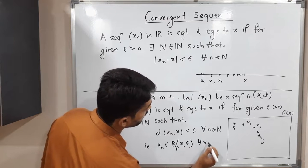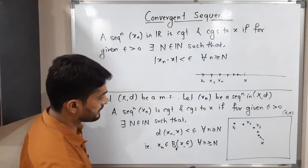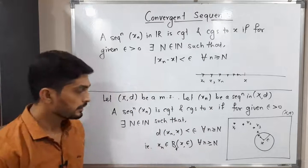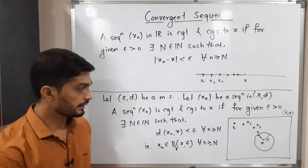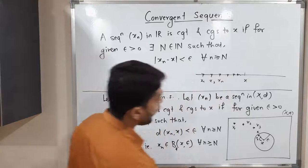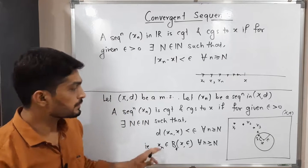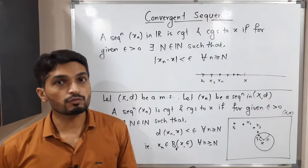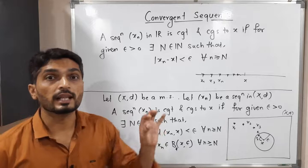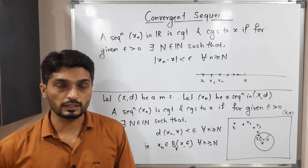This is true for all n greater than or equal to capital N. In the diagram we have a ball in the metric space (X, d) with center x and radius epsilon. There is some natural number N, and all terms beyond that N — xₙ, xₙ₊₁, and so on — lie inside the ball, while previous terms can lie outside. This is the geometric meaning: for given epsilon, there exists some N such that for n greater than or equal to N, all terms lie inside the ball with center x and radius epsilon.